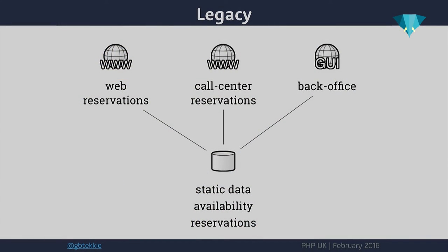What I wanted to highlight in this diagram is also the different types of data that live in the data layer. First, there are the reservations that have already happened — some require online check-in, but it's essentially historical data. The second type is availability information, telling people if there are more flights available and what the prices are. It's a very complex pricing scheme — not like normal product pricing. They go in batches of tickets and the price also depends on how long before the actual flight you make the reservation. The third type is static data: information about the flight itself and about additional upsell products the company is selling.